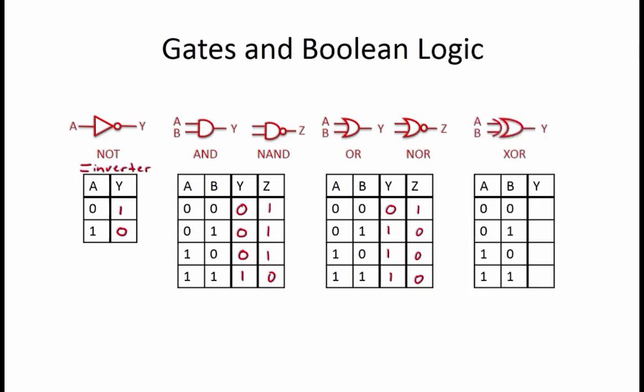Finally, the last basic gate is an EXCLUSIVE OR. The EXCLUSIVE OR produces a 1 output if exactly one of its two inputs is a 1 and 0 otherwise. So for AB equals 0, 0, Y equals 0. For AB equals 0, 1, Y equals 1. For AB equal to 1, 0, Y equals 1. And for AB equals to 1, 1, Y equals 0.